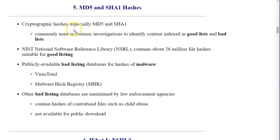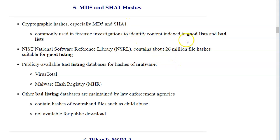The two cryptographic hashes we're discussing here within the context of our Autopsy digital forensic tool are both commonly used to identify content using the result as an index of both good items and bad items, also known as good lists and bad lists.